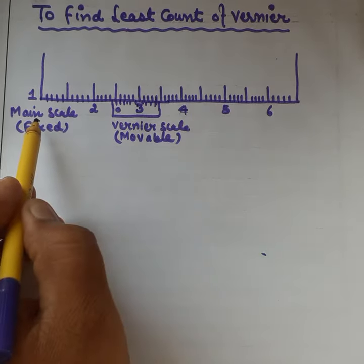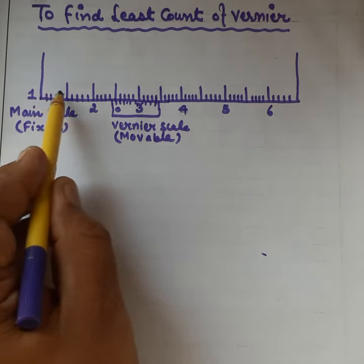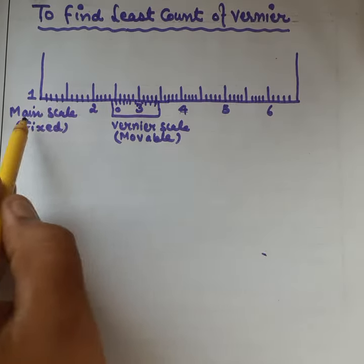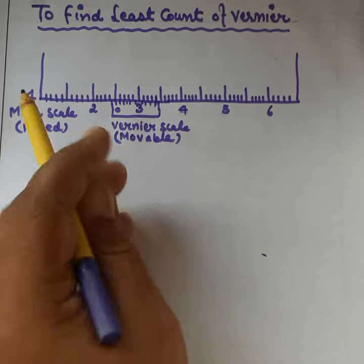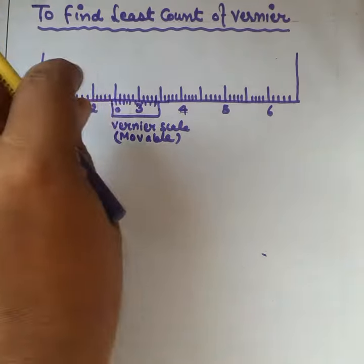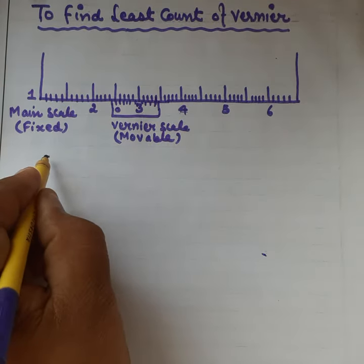One is the main scale which is fixed, and this is the vernier scale which is movable, that means it can slide over the main scale.